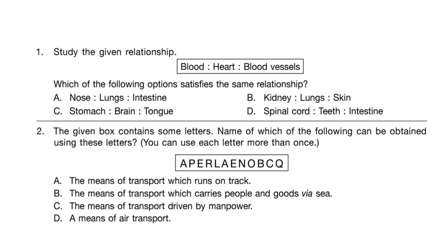Option C: the means of transport driven by manpower — that can be a bicycle, but Y is not given, so it is not possible. Option D: a means of air transport — here aeroplane is possible. So the answer is option D.